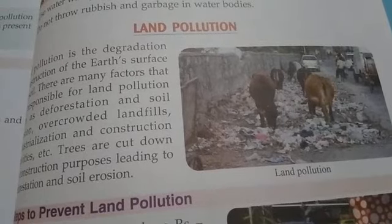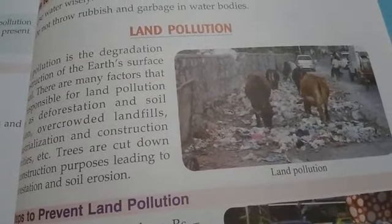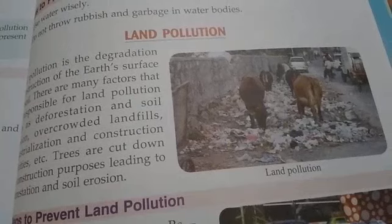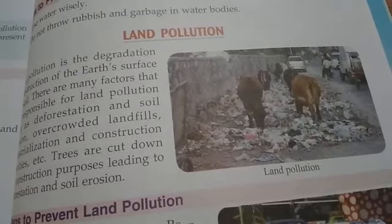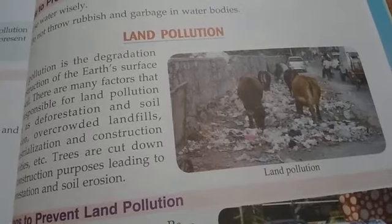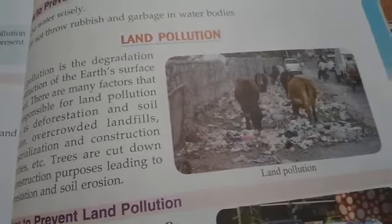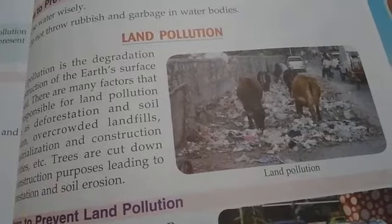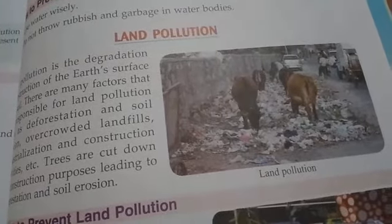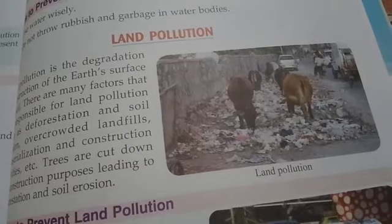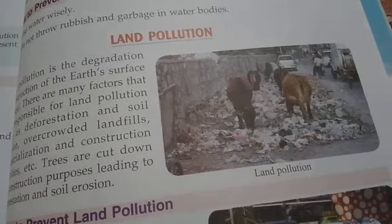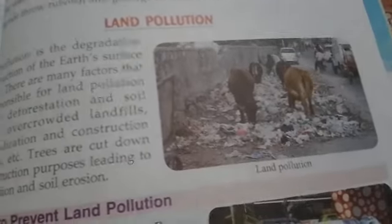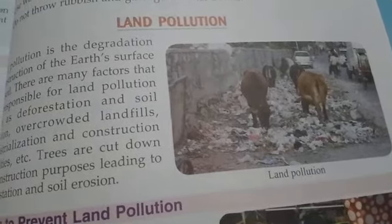There are many factors responsible for land pollution, such as deforestation and soil erosion. Deforestation causes soil erosion. The roots of plants hold the soil firmly, so plants can prevent soil erosion. Whenever human beings cut down plants and trees, deforestation takes place and soil erosion also takes place.